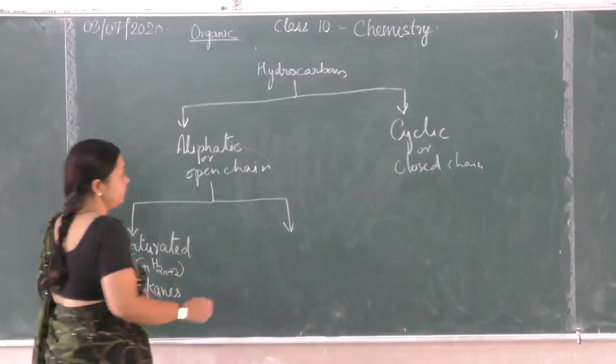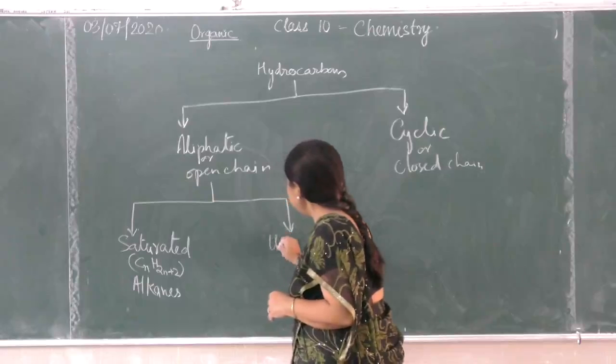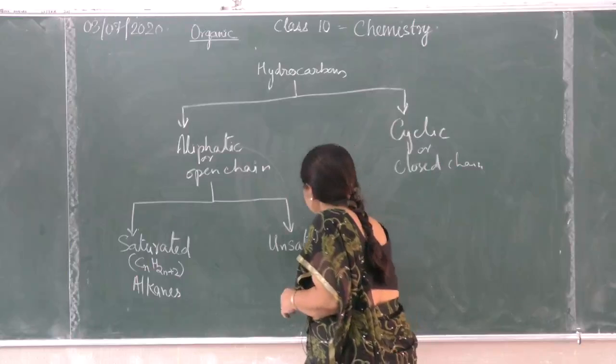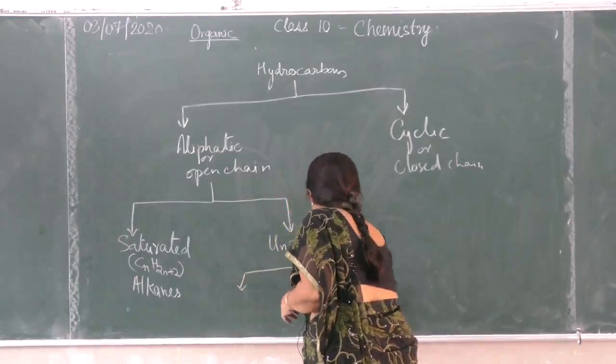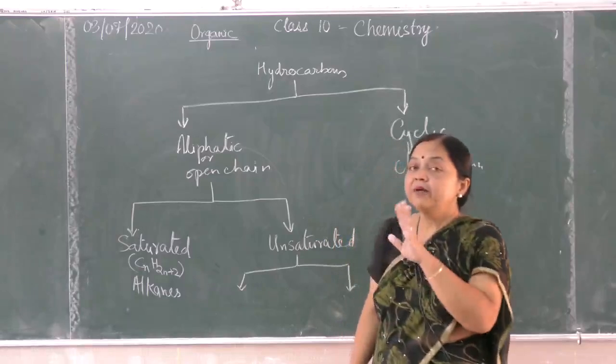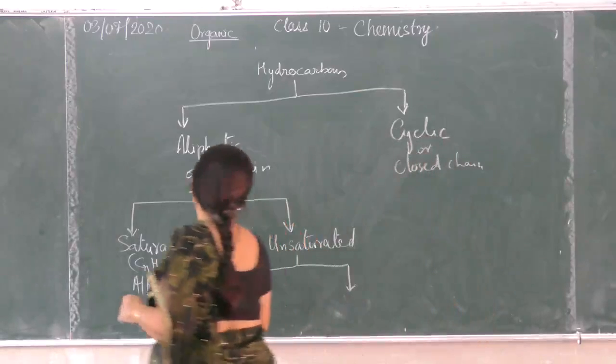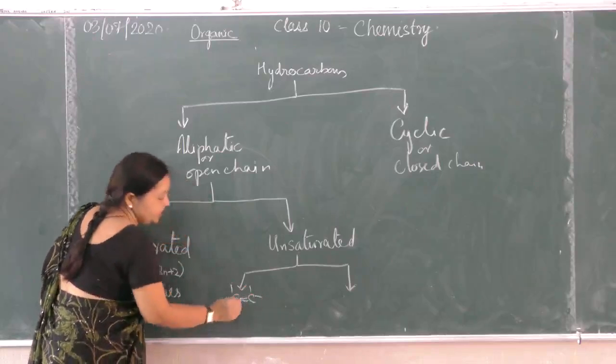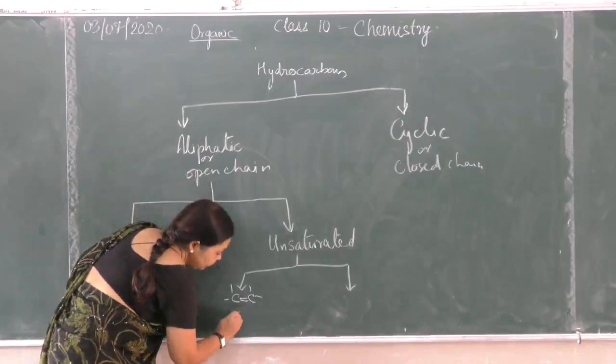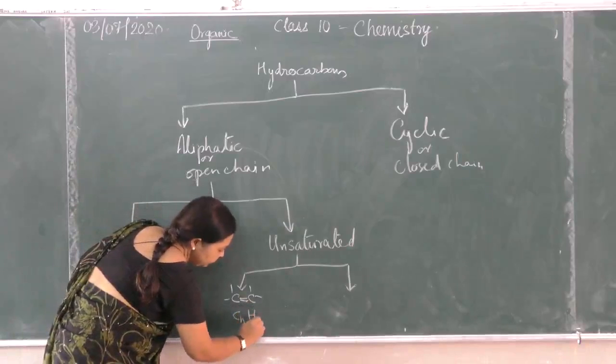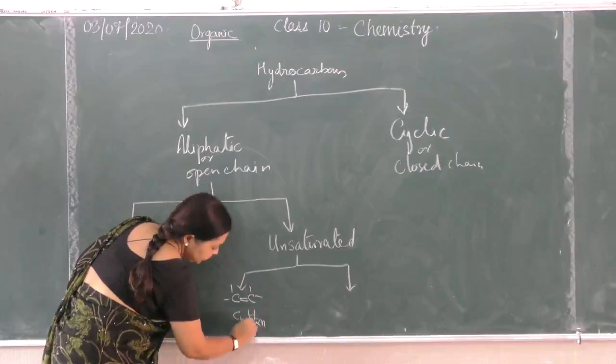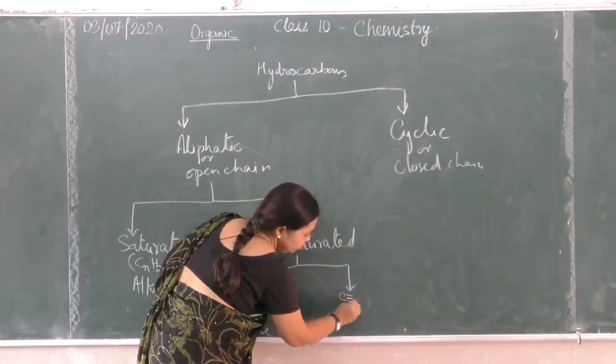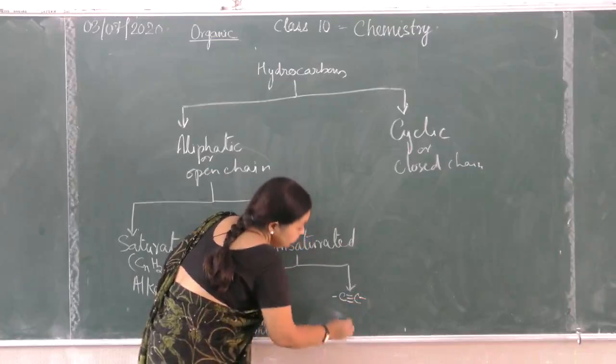Unsaturated has two types - unsaturated means there are carbon-carbon double bonds or carbon-carbon triple bonds. If there is a double bond present between two carbons, then it is called alkene with the general formula CnH2n. If there are triple bonds between carbon atoms, then it is called alkynes with the general formula CnH2n-2.